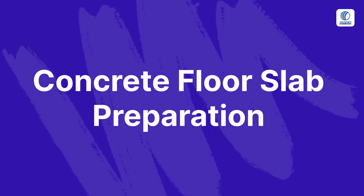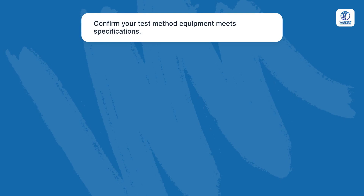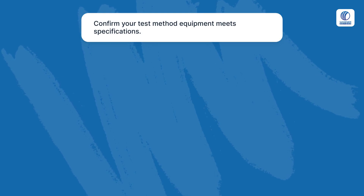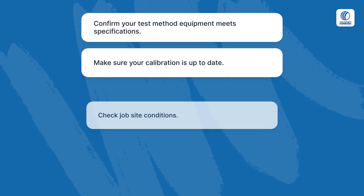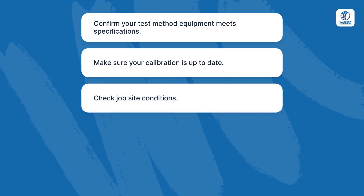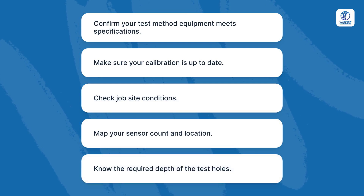Concrete Floor Slab Preparation. Confirm your test method equipment meets specifications. Make sure your calibration is up to date. Check job site conditions. Map your sensor count and location. Know the required depth of the test holes.